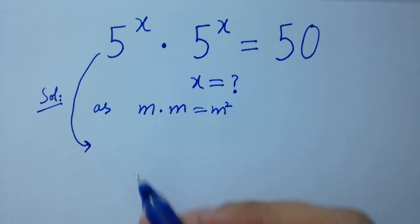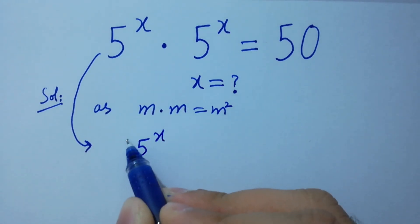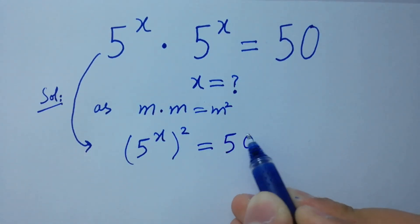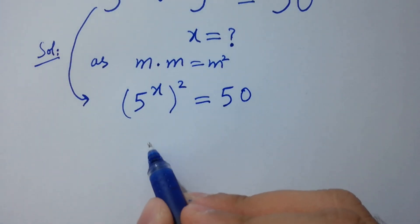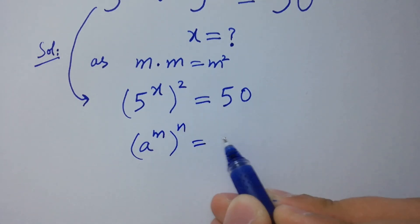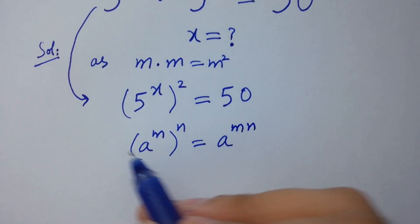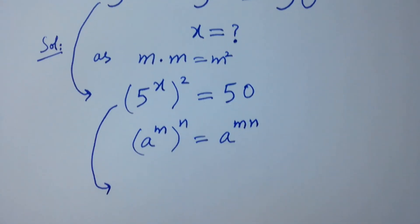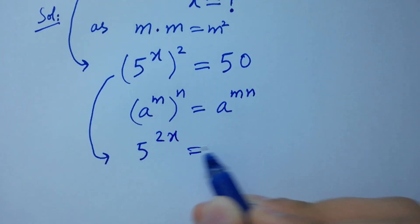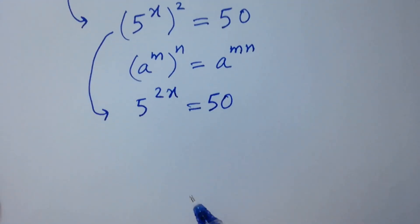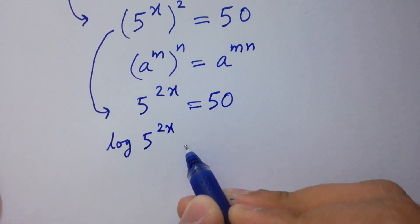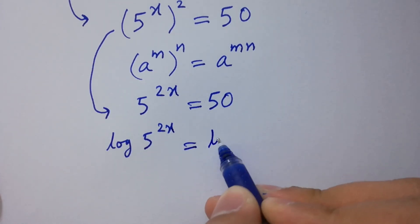Then it will be 5 to the power x, to the whole power 2, equals 50. Using the rule a to the power m, to the whole power n, equals a to the power mn, we have 5 to the power 2x equals 50.